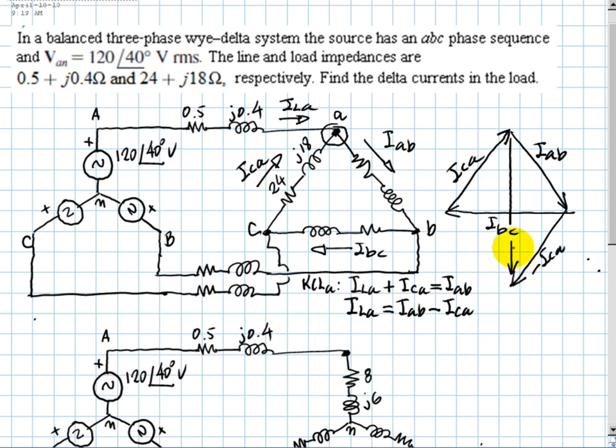But ILA is a value that we know already. Yes we do. What we need to find is IAB and all the others. What I want out of this diagram is this phase, 30 degrees. This tells me that the phase of IAB is the phase of whatever ILA has plus 30 degrees.